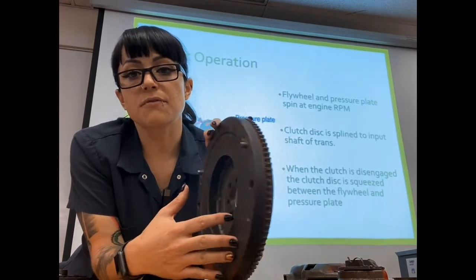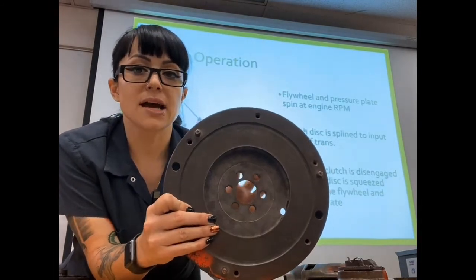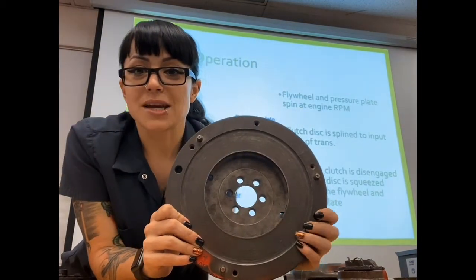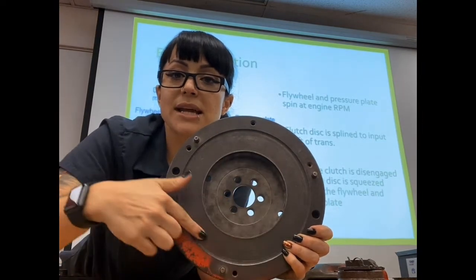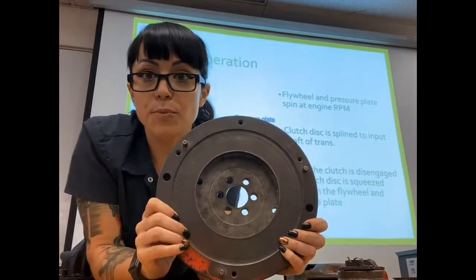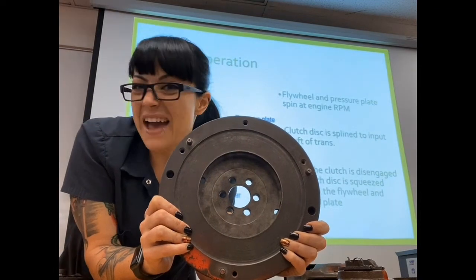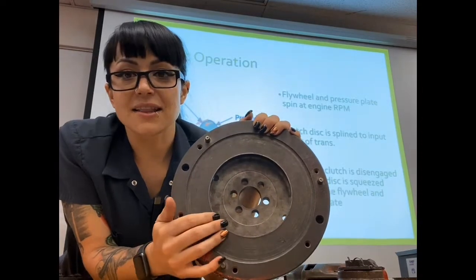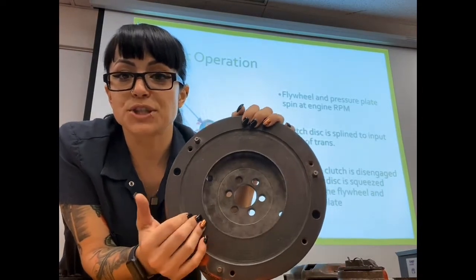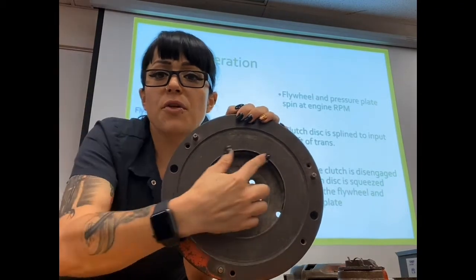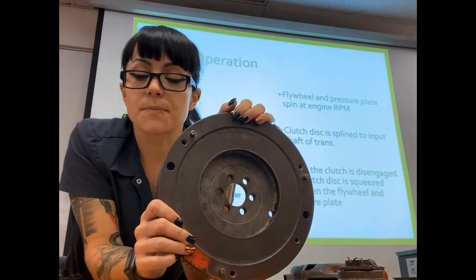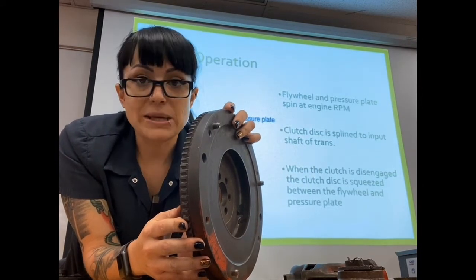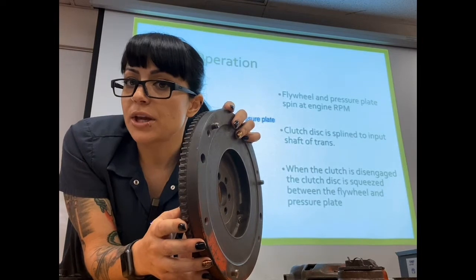On the other side of the flywheel — the transmission side — there's actually a nice flat piece that almost looks like a brake rotor, and it kind of acts like one too. This one has been sitting for a while so it has a little surface rust. But normally when you pull a flywheel off a vehicle, this section is going to be nice and shiny. The flywheel is going to be spinning at engine speed.